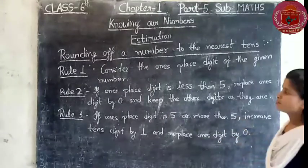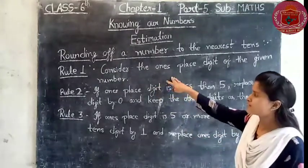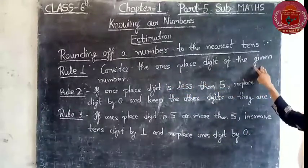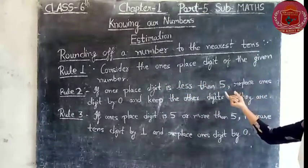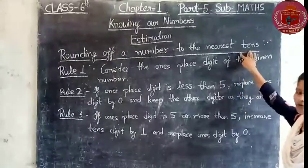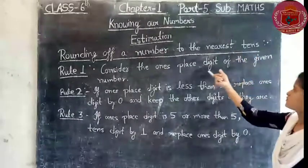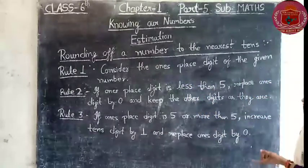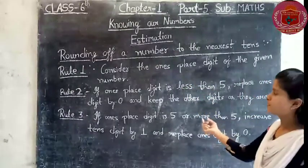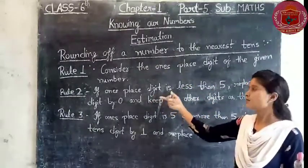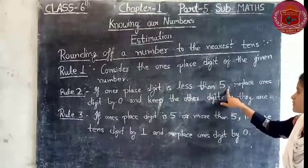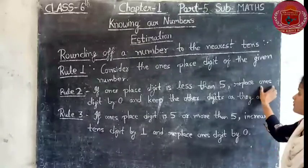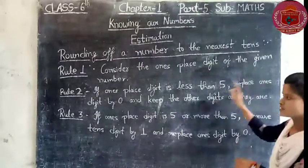So now I will explain it one by one. Rule number 1 says: consider the ones digit of the given number. If the ones digit is less than 5, then replace the ones digit by 0.